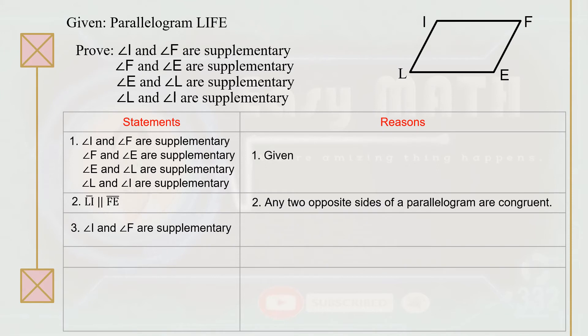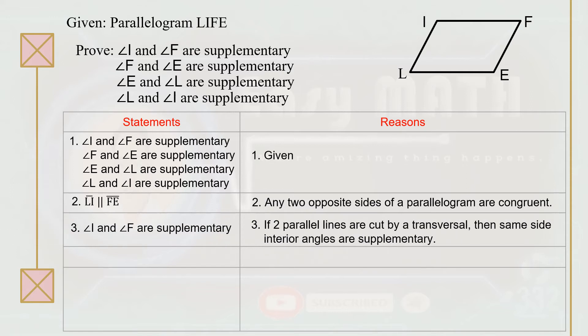Statement number three: angle I and angle F are supplementary, because if two parallel lines are cut by a transversal, then same-side interior angles are supplementary. Statement number four: angle I is congruent to angle E, and angle F is congruent to angle L, which implies that the opposite angles of a parallelogram are congruent — that is property number two.